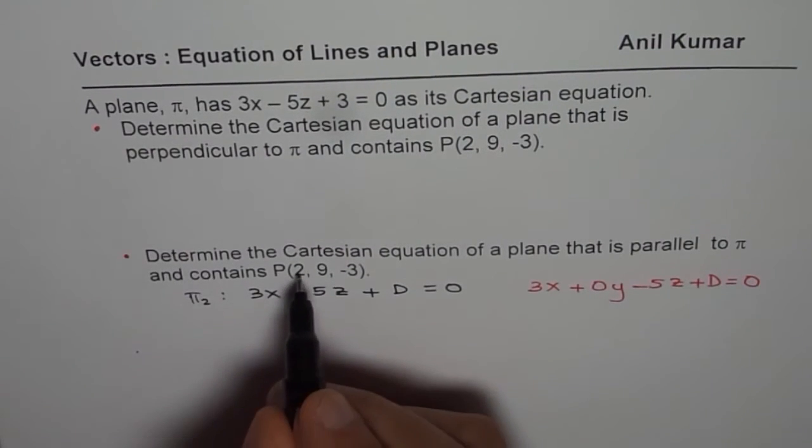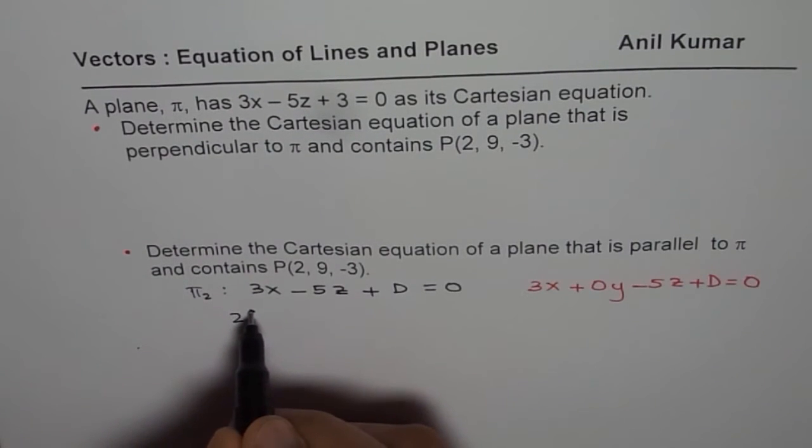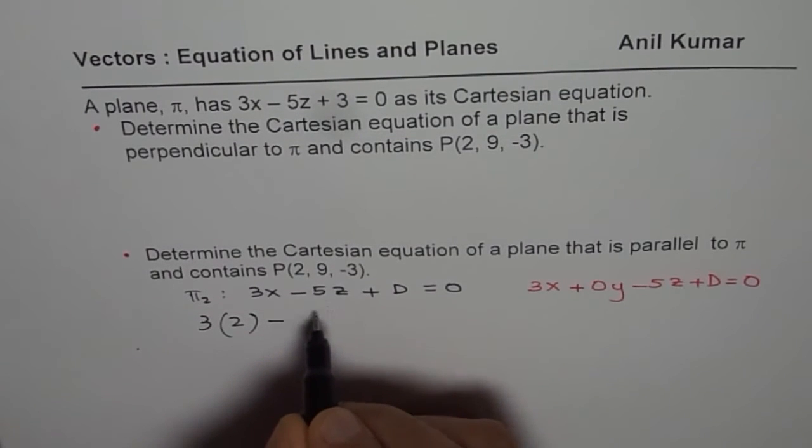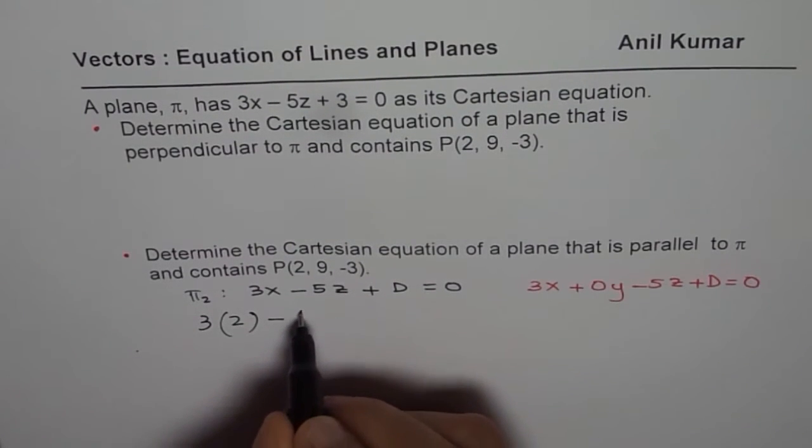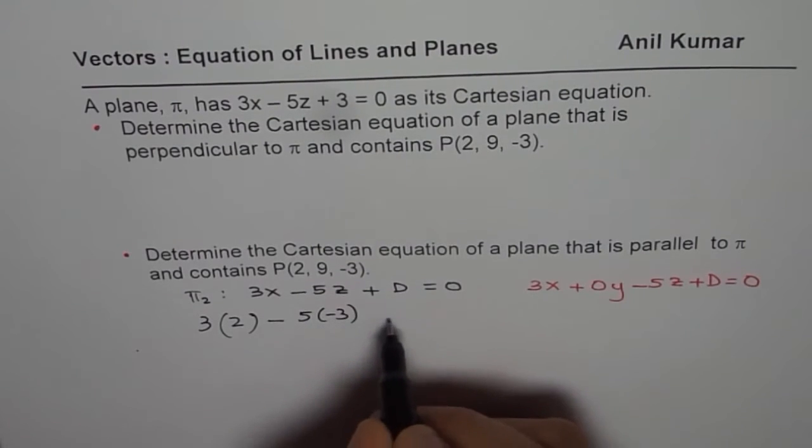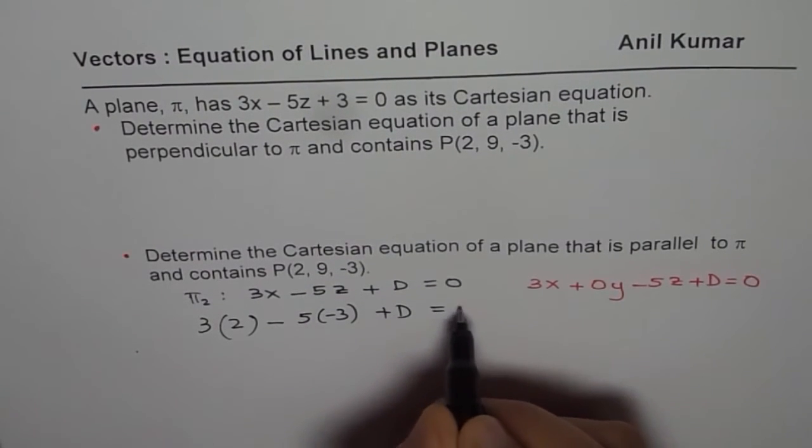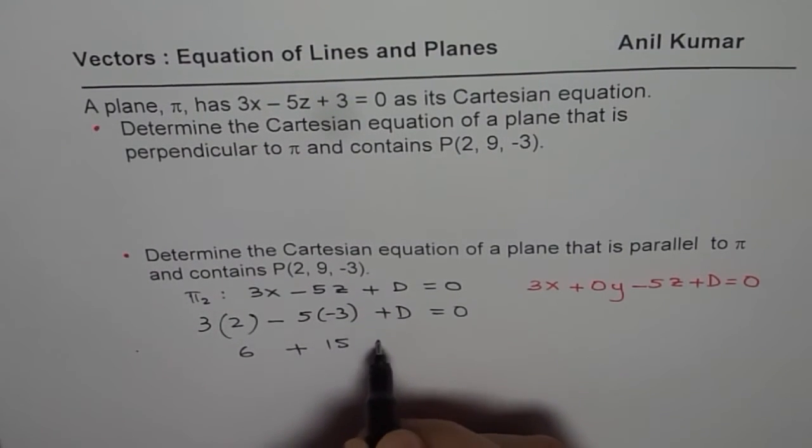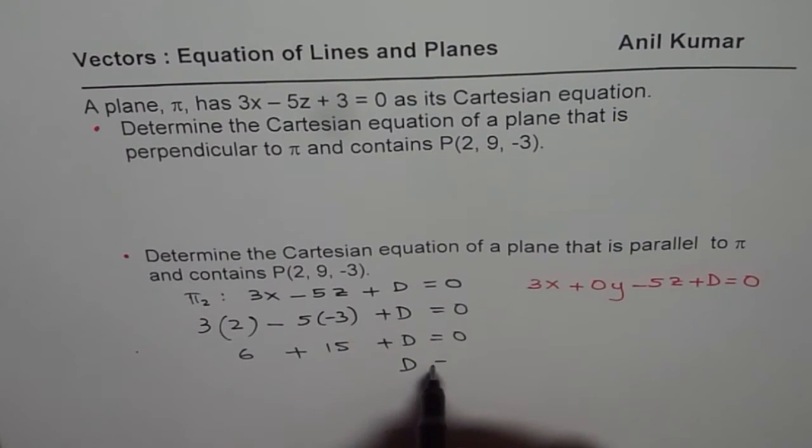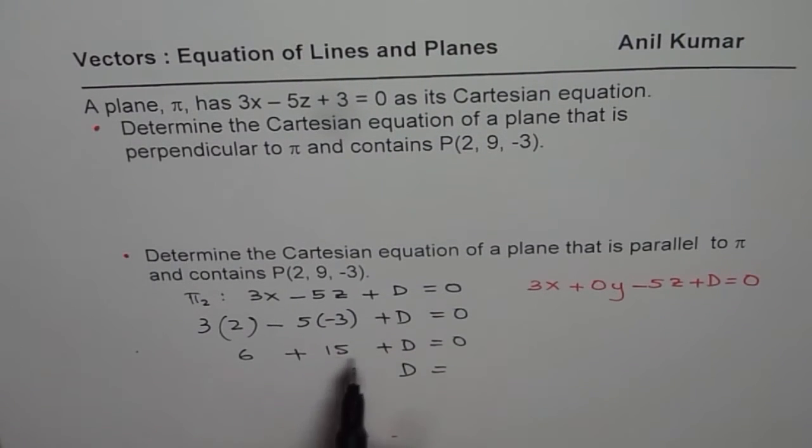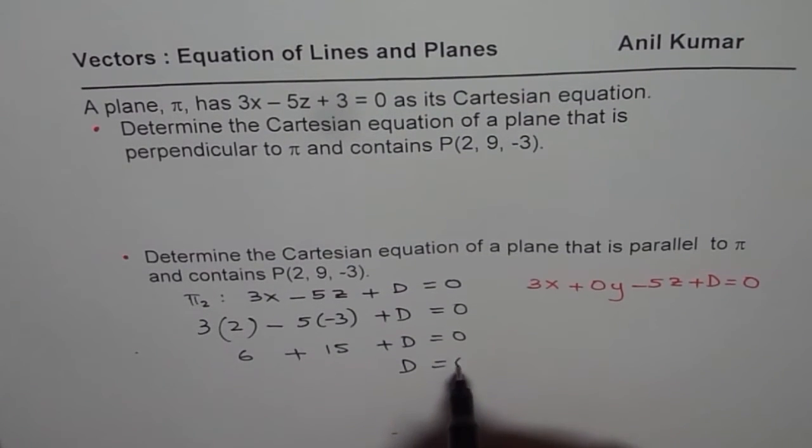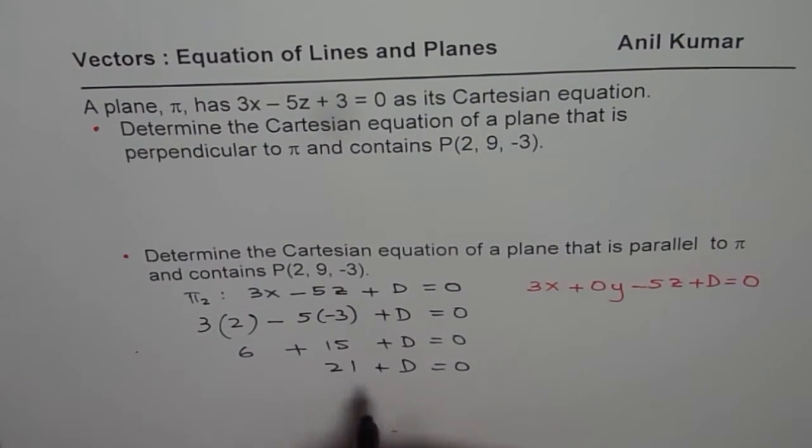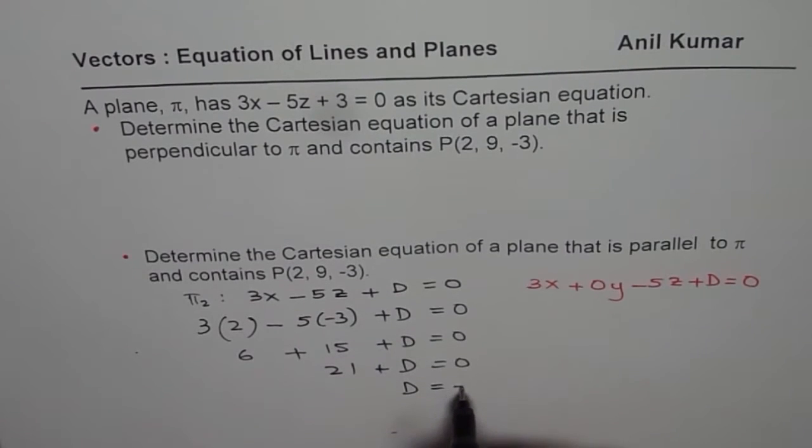So let me substitute. So if 2, if I substitute here, I get 2 times 3. Let me write here, 3 minus. So this is z, z is minus 3. So 5 times minus 3 plus D equals to 0. So that gives you 6 plus 15 plus D equals to 0. Or you can say D is equals to minus of, let me go one more step. So 6 plus 15 is 21. Let me write like this now. And so D equals to minus 21.